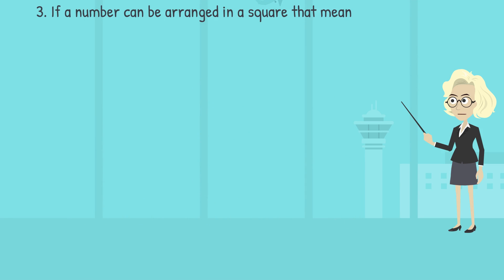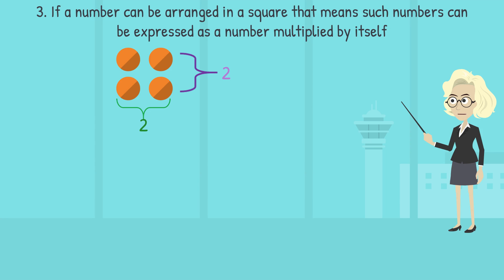If a number can be arranged in a square, that means such numbers can be expressed as a number multiplied by itself. For example, 4 and 9.